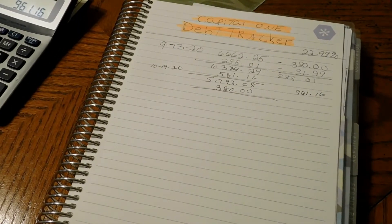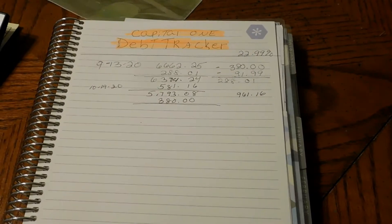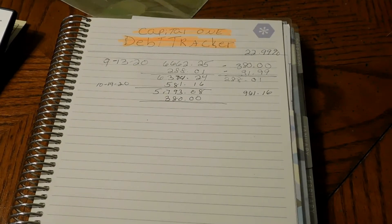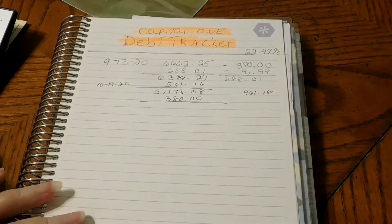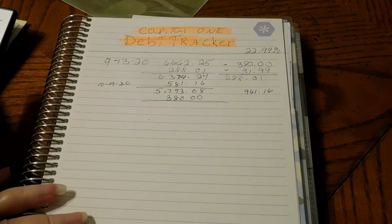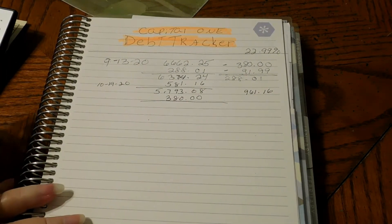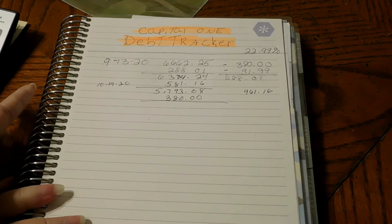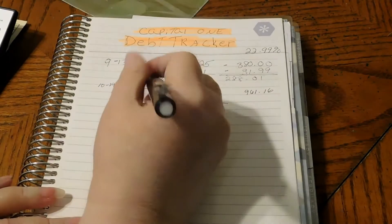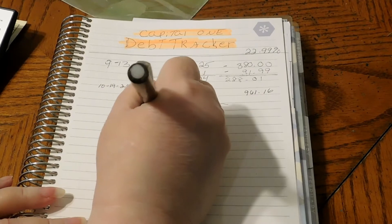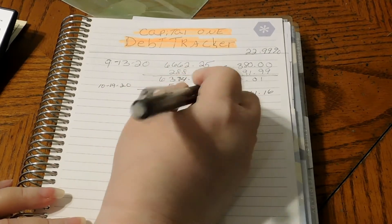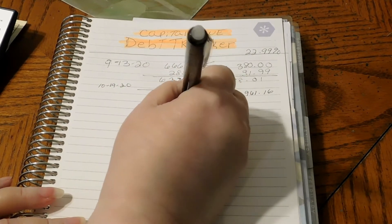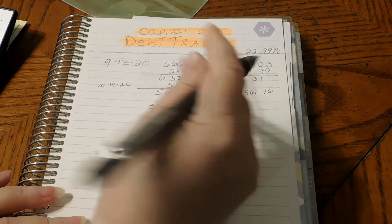Alright, let's do $5,793.08 minus $380, which gives us $5,413.08.